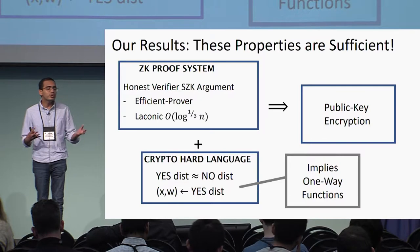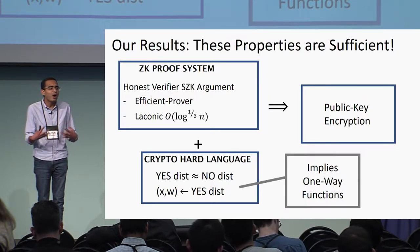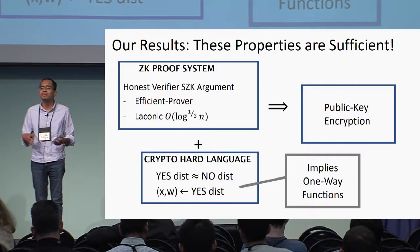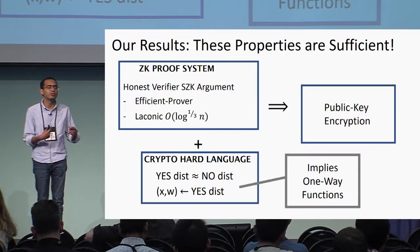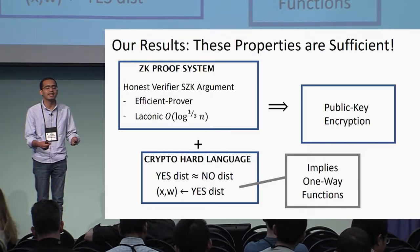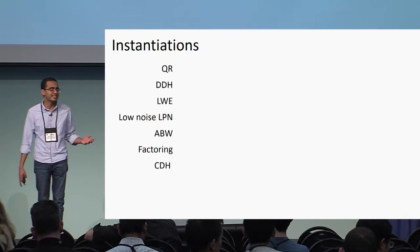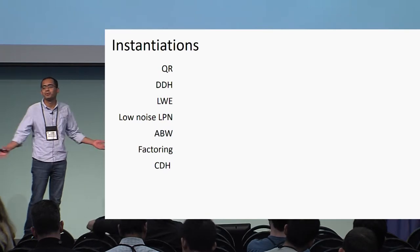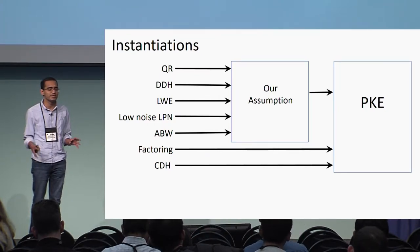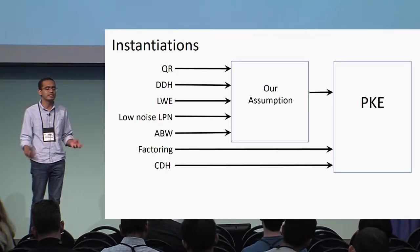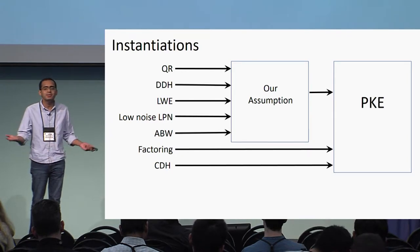So what we show is that these properties are sufficient to construct public key encryption. What assumptions are actually captured by this characterization? Here is an exhaustive list of assumptions known to imply public key encryption. This assumption captures basically all the decision variants — decision assumptions — including QR and LWE and the assumptions given by Applebaum, Barak, and Wigderson. It does not capture factoring and CDH, for which we don't actually know zero-knowledge proofs. So it captures most of them.